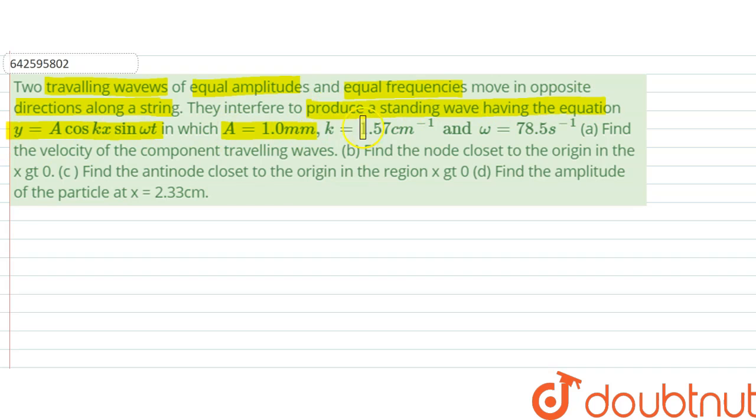They interfere to produce a standing wave having the equation, in which A is 1mm, k is 1.57cm⁻¹ and ω is 78.5s⁻¹. (a) Find the velocity of the component travelling waves. (b) Find the node closest to the origin in the region x greater than 0. (c) Find the antinode closest to origin in the region x greater than 0. (d) Find the amplitude of the particle at x equals 2.33cm.